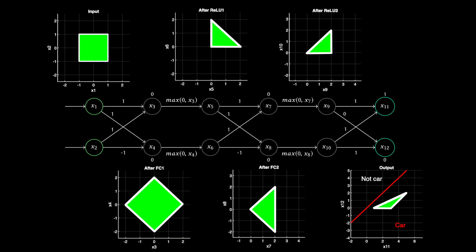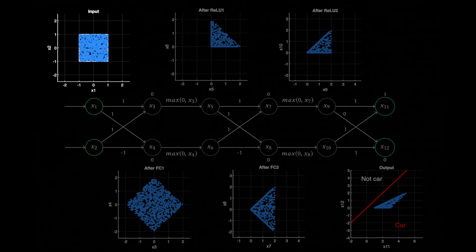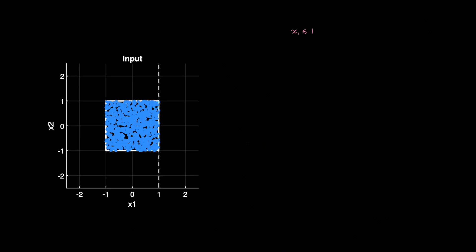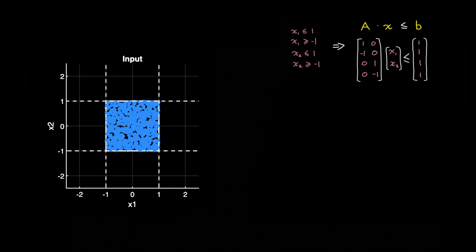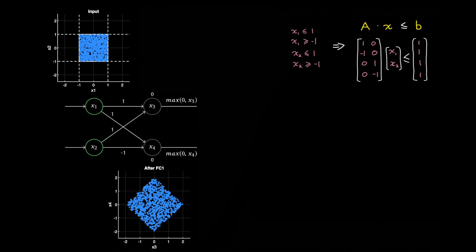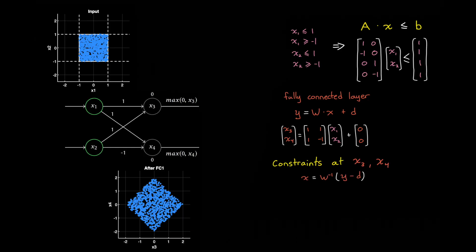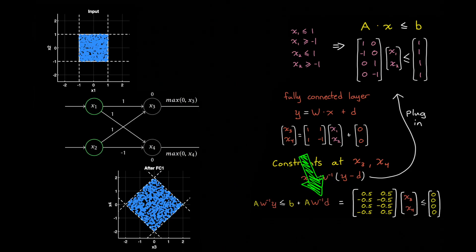The first approach we can try is something called the polyhedra method. Here, we describe the feasible inputs as a set of inequalities. So for this example, one inequality is that x1 must be less than or equal to one. Then we also have x1 must be greater than or equal to minus one. And then we have the same for x2. And so we can now represent these constraints in the form Ax must be less than or equal to b, where x is the input vector space. So now at this point, we can push these constraints through the first layer of our network. Basically, for this simple layer, we are applying the affine map y equals wx plus d, where y is the output vector space x3 and x4, and w and d are the weight and bias matrices for the fully connected layer. A little bit of math shows that the new constraints in the x3 and x4 space are given by these matrix inequalities, which if we plot on the graph, we can see that they perfectly bound the feasible space after the first fully connected layer.